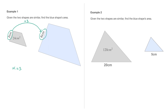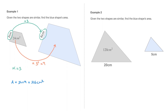Now that we know the scale factor for length is 3, all we have to do to get from this 24cm² area to the area of the blue shape is multiply by 3 squared, where the 3 is the scale factor for length, and we square it because we're dealing with an area. 3 squared equals 9, so to find the area of the blue shape, capital A, we calculate 24 times 9, which equals 216 square centimeters.